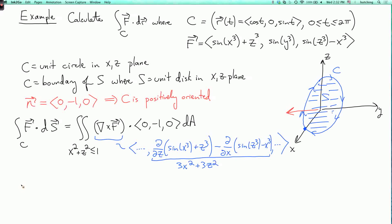So this integral is the double integral over x² + z² ≤ 1. And I have to dot product with the vector (0, -1, 0). So I get -3x² - 3z² dA. And now I can do polar coordinates.